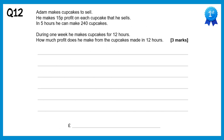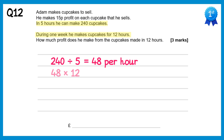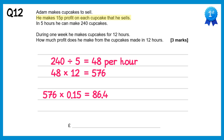Adam makes 240 cupcakes in 5 hours, so his rate is 240 ÷ 5 = 48 cupcakes per hour. In a week he makes cupcakes for 12 hours, so 48 × 12 = 576 cupcakes. At 15p profit per cupcake, 576 × 15p = 8640p = £86.40.